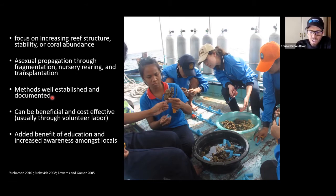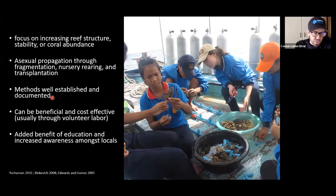Then by all means, asexually fragment that thing and sell it to everyone — keep that genetic line. It's in an artificial environment, so just keep reproducing it through asexual fragmentation so you don't have to go back to the ocean and take more corals.